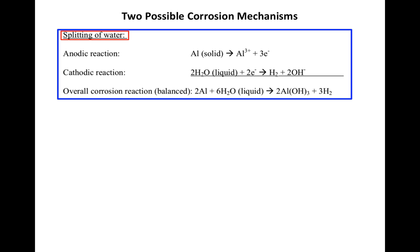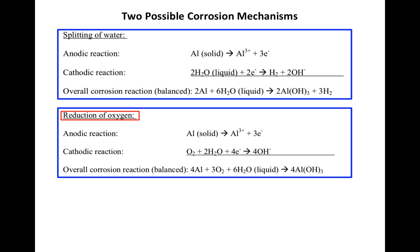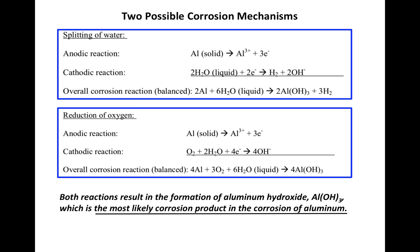There are two possible corrosion mechanisms. The first of these is shown here, which involves the splitting of a water molecule. The second is the reduction of oxygen. Both of these reactions result in the formation of aluminum hydroxide, which is the most likely corrosion product in the corrosion of aluminum.